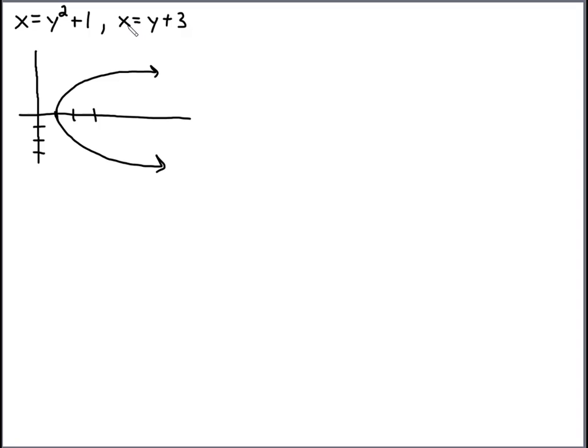This is a linear function. We can graph this one by plotting the two intercepts. If y is 0, you can see that x is 3, so we'll have that as an intercept. And then if x is 0, then it looks like y is negative 3. So 0, negative 3 is another one.